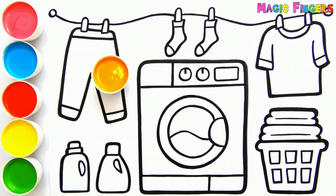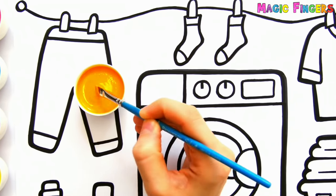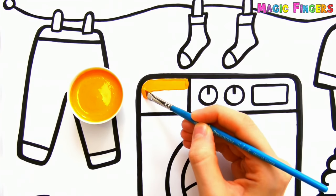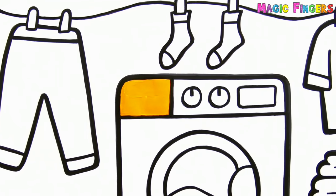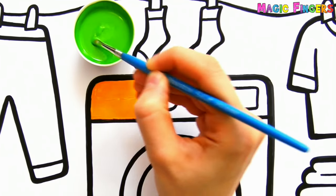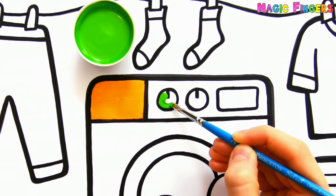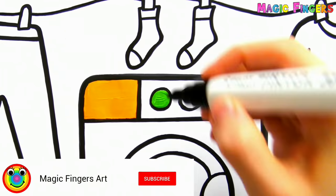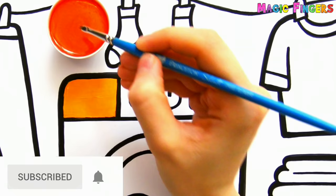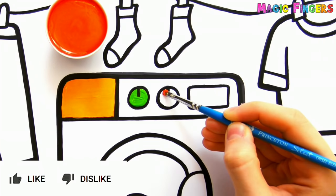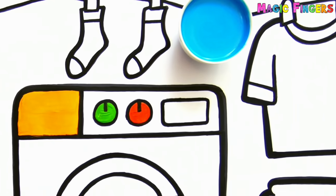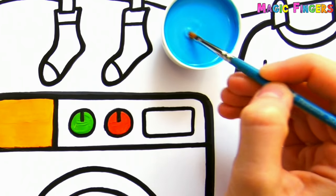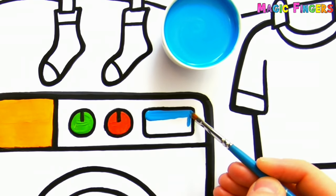Orange. This is going to be a colorful washing machine. Green. It's nice to wear clean clothes. Red. Blue. I love the smell of clean clothes.